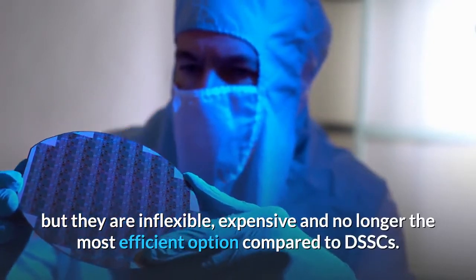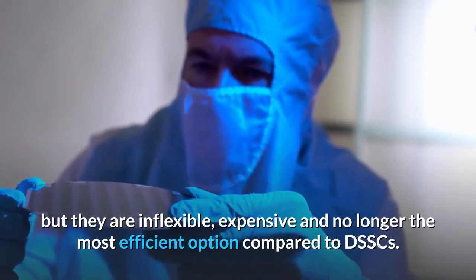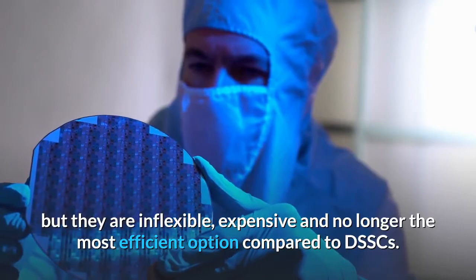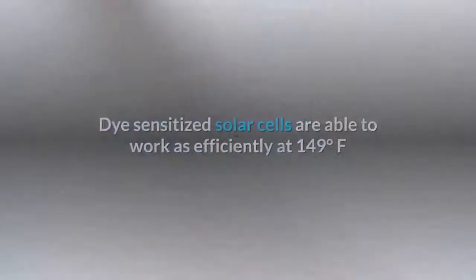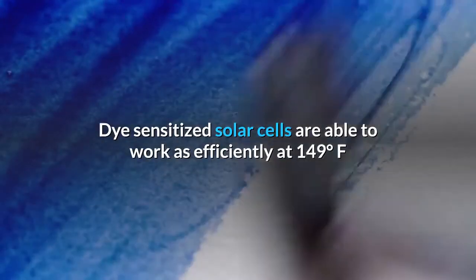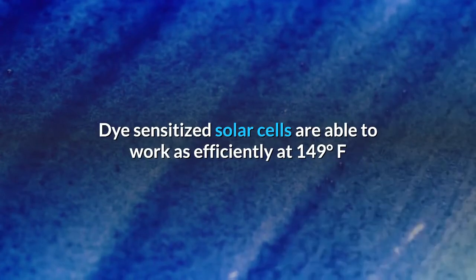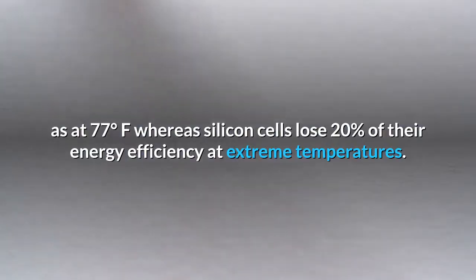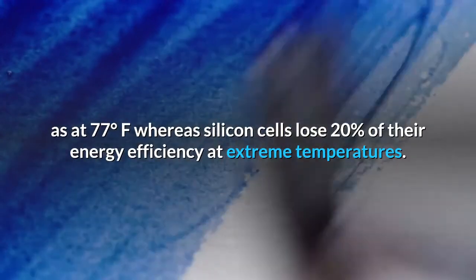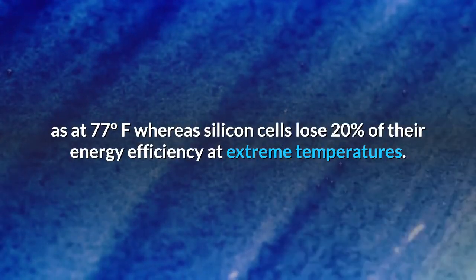Dye sensitized solar cells are able to work as efficiently at 149 degrees Fahrenheit as at 77 degrees Fahrenheit, whereas silicon cells lose 20% of their energy efficiency at extreme temperatures.